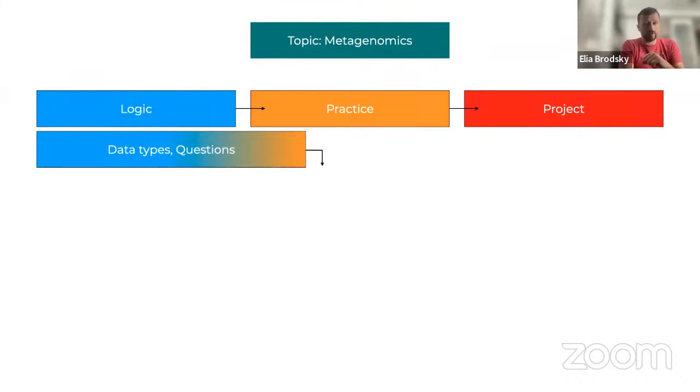The logic focuses primarily on the different types of data that metagenomics covers and the specific questions we would be asking using that data. The practice leads us into the specific analytical approaches so we understand in detail what are the types of analyses, what are the outcomes, and how do we know what is significant and what is not significant. Where is signal and where is noise?